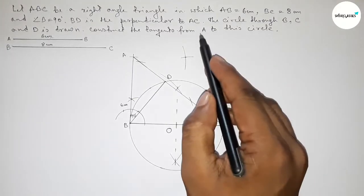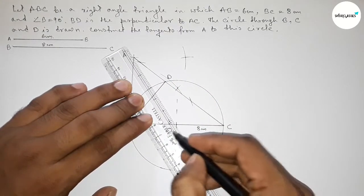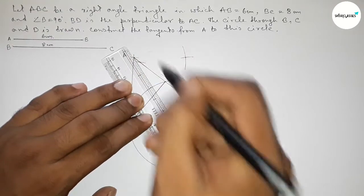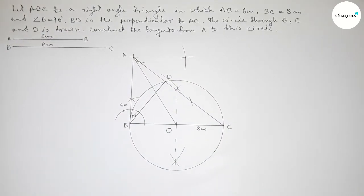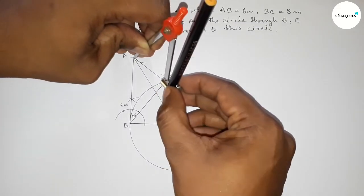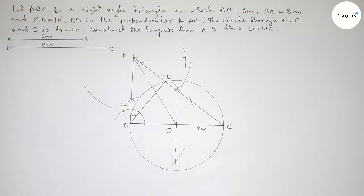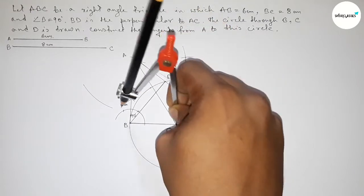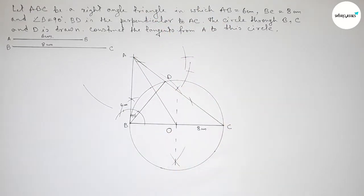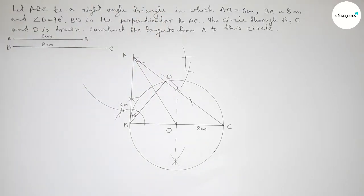Now we have to join line A and O. Next, we bisect line AO using the compass. Putting the compass on point A and taking greater than half of AO, drawing arcs on both sides. With the same length, putting the compass on point O and cutting arcs here and here.